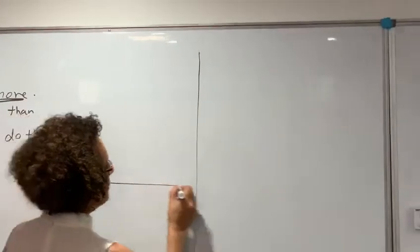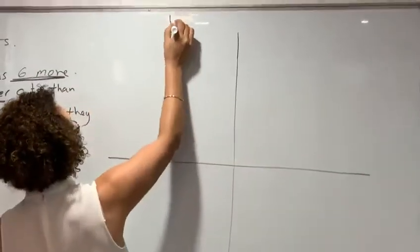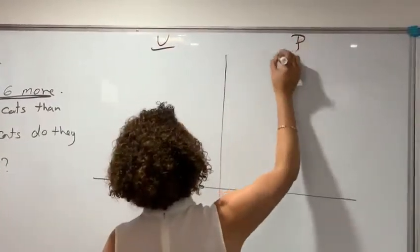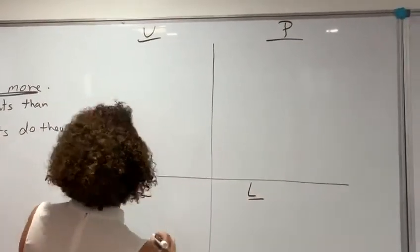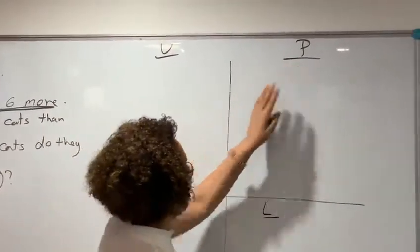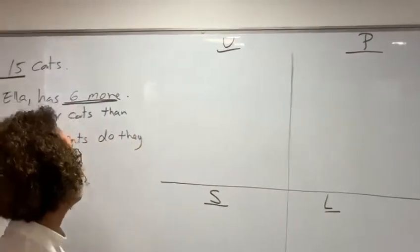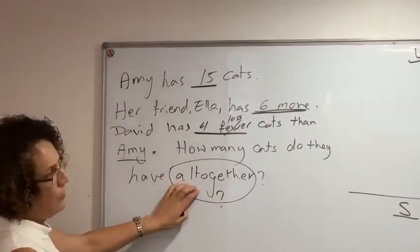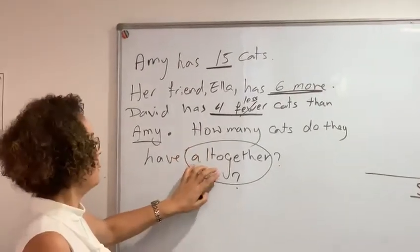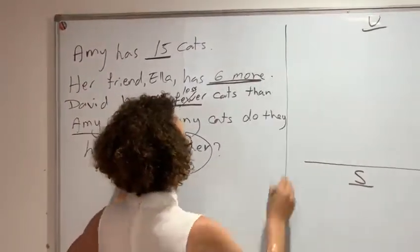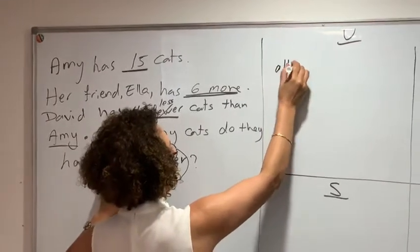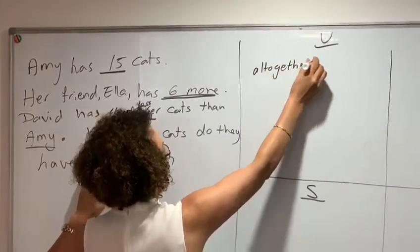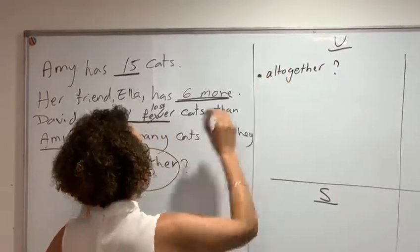Solving our problem, we use the UPSL strategy, our own strategy we developed here. So Understand, Plan, Solve and Learn. So how do we show understanding? First of all you need to state that this is the question in the question. So the first thing I need to do is all together. That is my question. That's the first point.